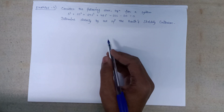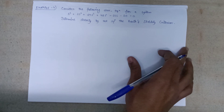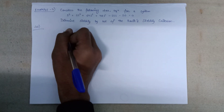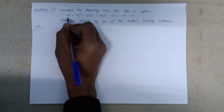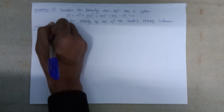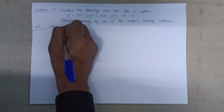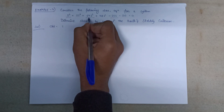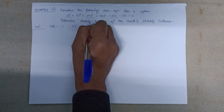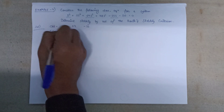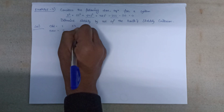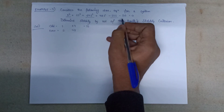What we need to do is first form the Routh array and check the stability — whether the system given to us is stable or not. According to the characteristic equation, we form the Routh array. The odd-power coefficients are: s⁵ has coefficient 1, s³ has coefficient 24, and s¹ has coefficient minus 25. The even-power coefficients are: s⁴ is 2, s² is 48, and s⁰ is minus 50.